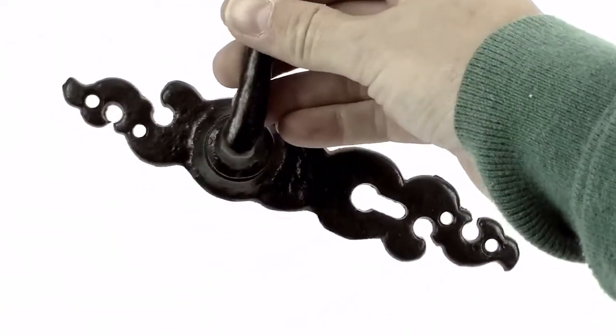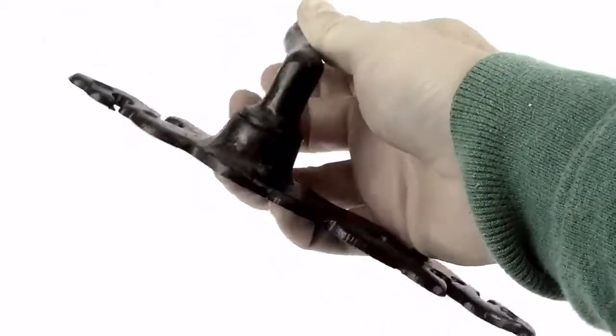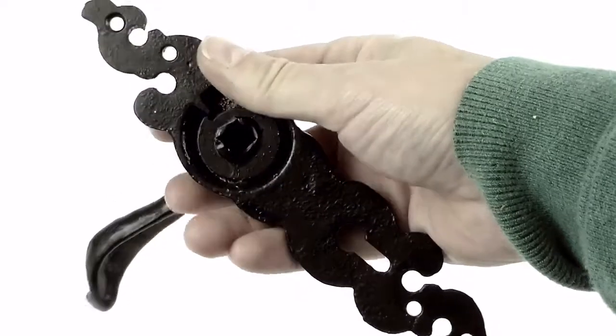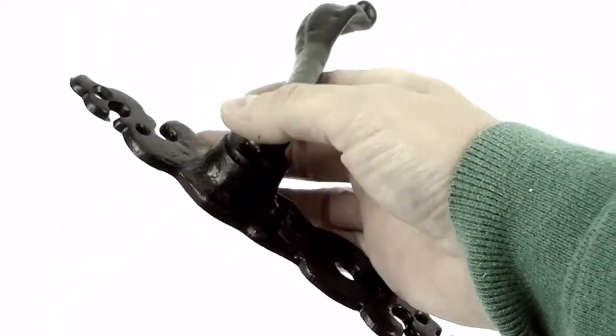They make their door handles from malleable iron rather than cast iron. Malleable iron requires an extra process to make it and it removes all the carbon from the iron so it makes it incredibly strong like steel.